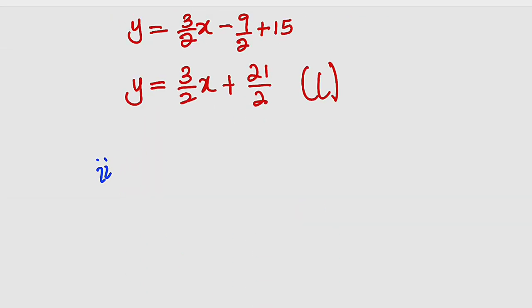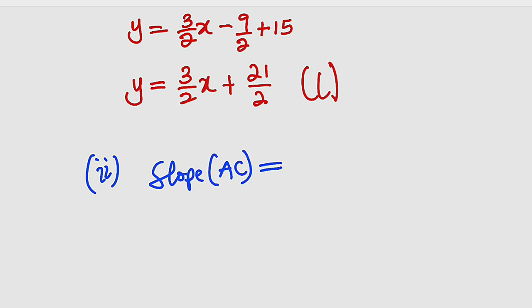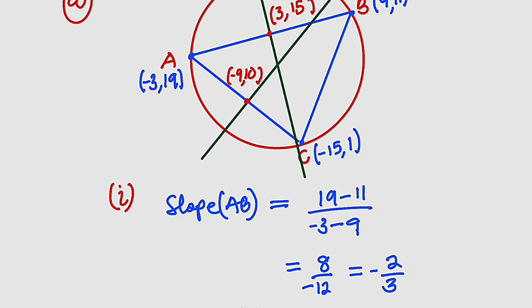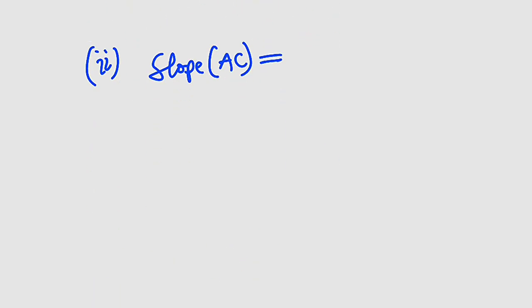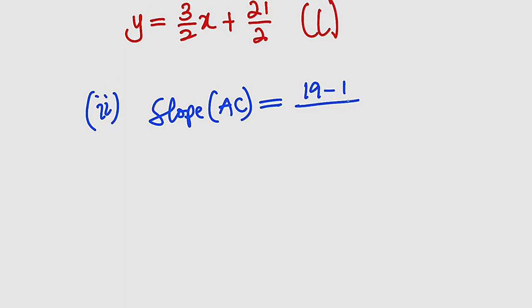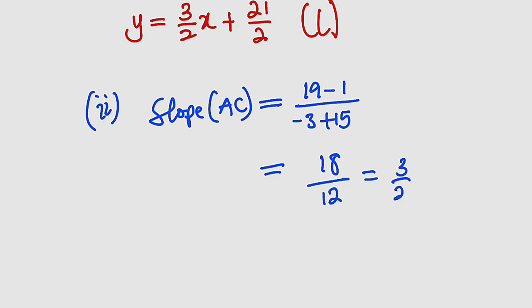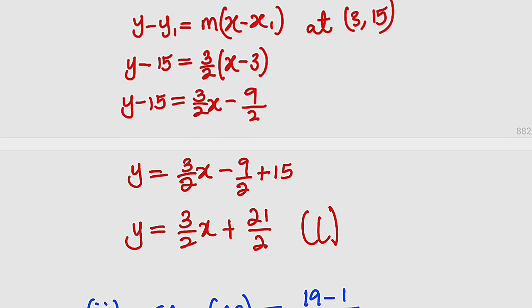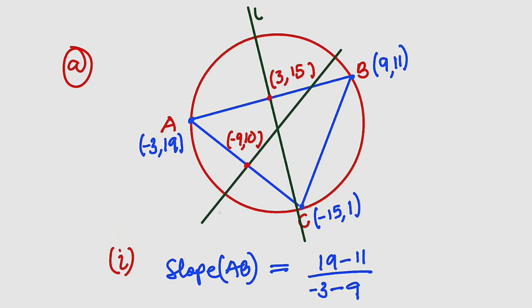Now we find the slope of line AC. The slope of AC equals (y2 - y1) / (x2 - x1) = (19 - 1) / (-3 - (-15)) = 18 / 12. Reducing to lowest terms by dividing by 6: 18/12 = 3/2. So the slope of AC is 3/2.